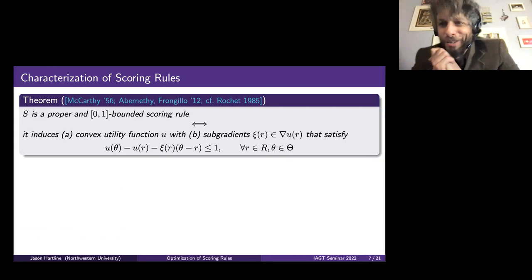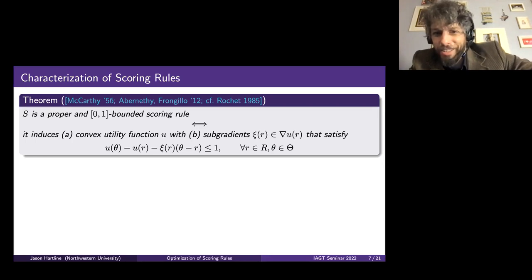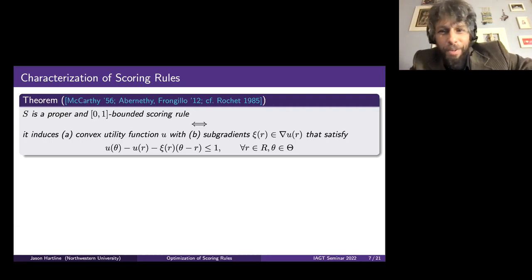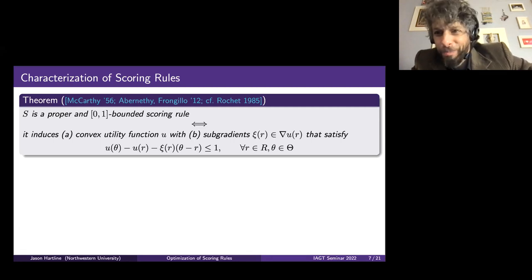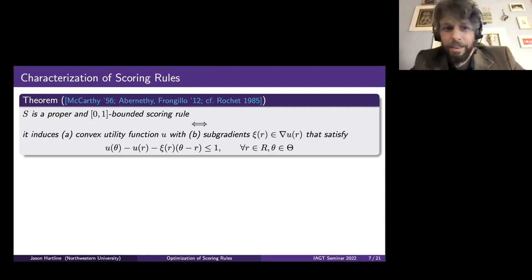Here's a characterization of proper scoring rules. A scoring rule is proper and bounded in [0,1] if it induces a convex utility function for the agent, and the subgradients of this convex utility function satisfy a boundedness property. This should look familiar because it's similar to Rochet's characterization of multi-dimensional mechanisms. The scoring rule version predated Rochet — McCarthy in 1956 had this basic formulation, and Abernethy and Frongillo generalized it to the version for incentivizing the mean.